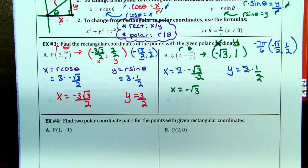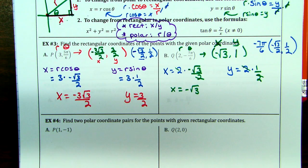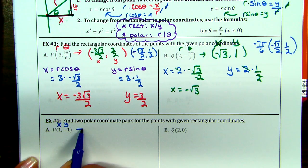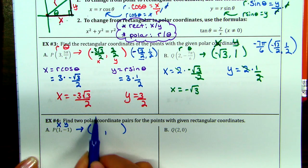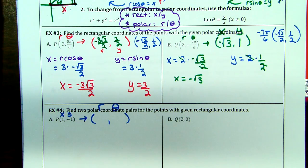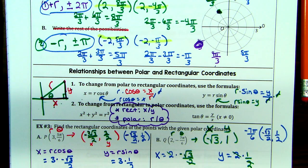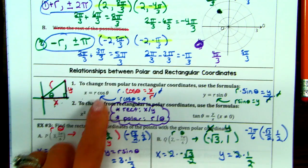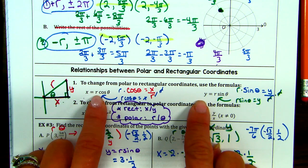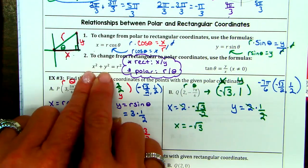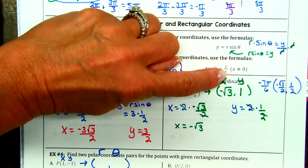Last concept: going from rectangular to polar. We have x and y; we need r and theta. Without having to memorize which formula to use, think about what you have. I have x and y — that's not going to give me r and theta from the first two formulas. But if I do x squared plus y squared equals r squared, I can get r. And if I plug x and y into tan theta equals y over x, I find theta.